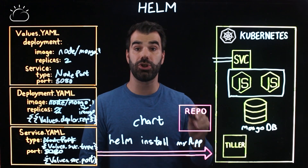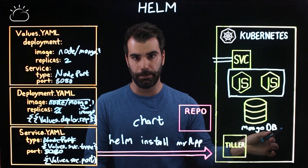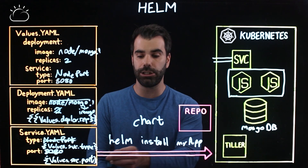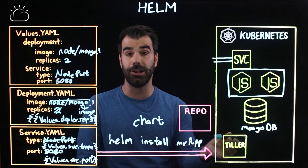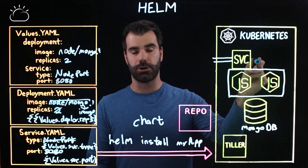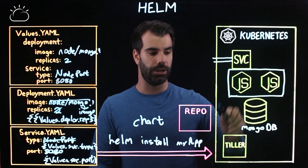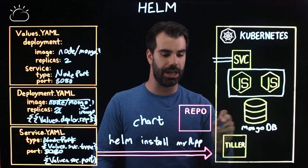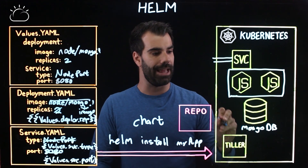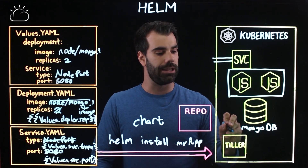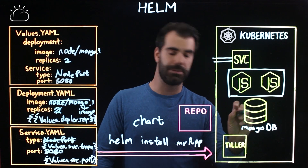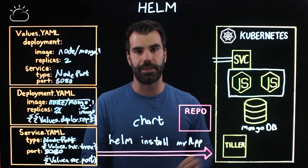Once everything is compiled, Helm sends this over to a component called Tiller that needs to be installed on your Kubernetes cluster. Think of Tiller as basically the server-side component of Helm. It takes the commands sent by the Helm client and turns them into something your Kubernetes cluster will understand — mapping the service, the deployment, and the database to their respective locations.